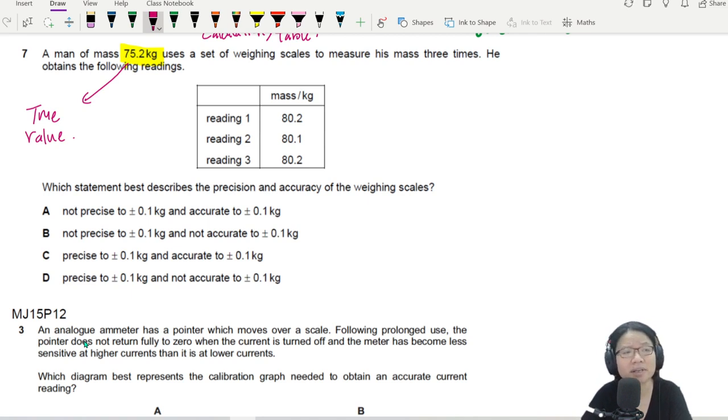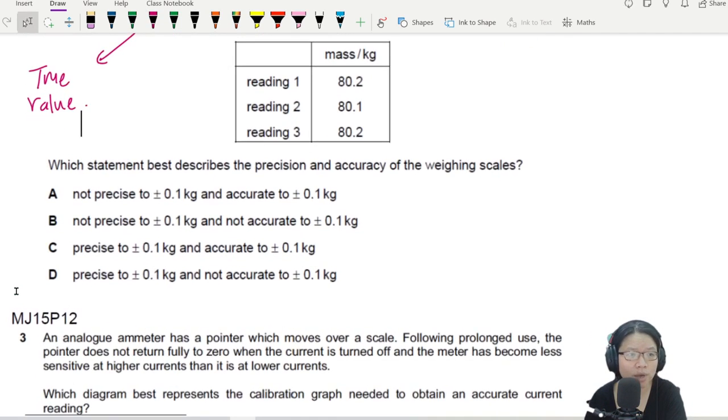This is obviously systematic error, right? He's supposed to be only 75.2 kg, but he stands on the weighing scale and it reads 80 kg. Which statement best describes the precision and accuracy of the weighing scales? Let's go.